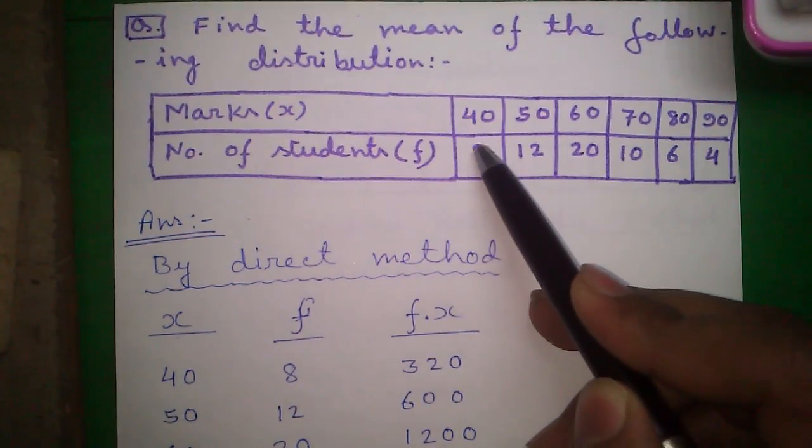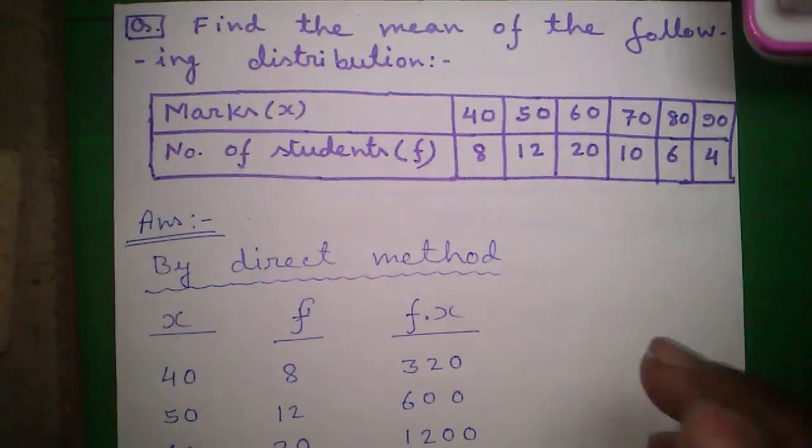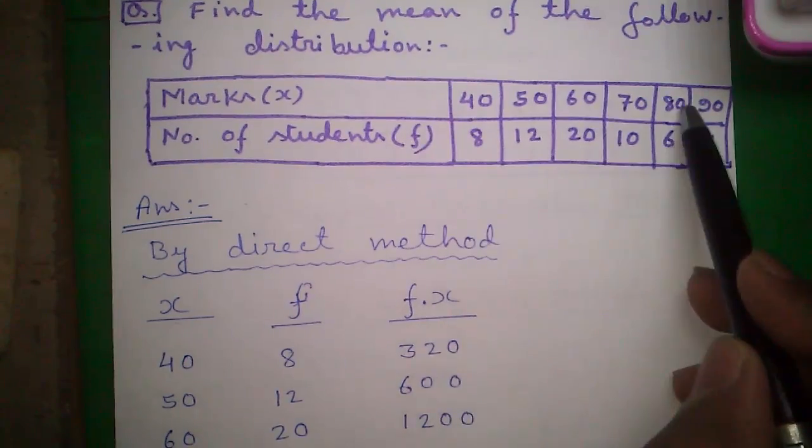That means 8 students got 40 marks, 12 students got 50 marks, and so on. We have to find out the mean of the number of marks.